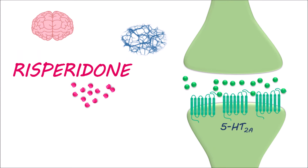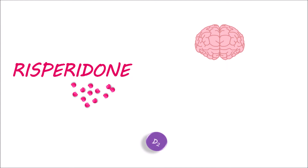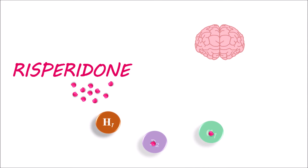Risperidone blocks these 5-HT2A receptors with more affinity, thereby blocking this neuronal transmission. This relieves both positive and negative symptoms of psychosis. Similarly, risperidone blocks D2 receptors in the mesolimbic pathway, which adds to its antipsychotic action. Apart from these, it can also block a variety of receptors like adrenergic alpha-1 receptors and histamine H1 receptors.